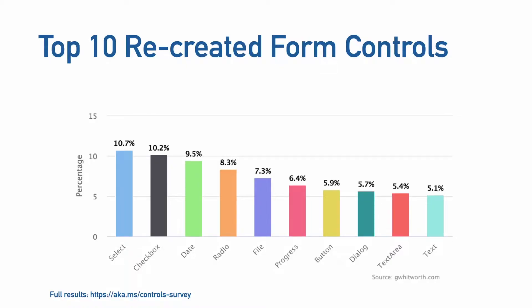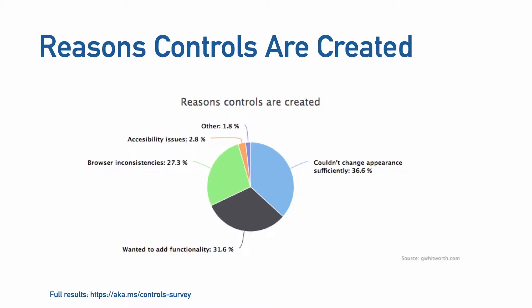Select came in at 10.7%, checkbox at 10.2%, and date at 9.5%, followed by radio, file, progress, button, dialogue, textarea, and text. Then he wanted to know the reasons why controls were being rebuilt. Over a third of respondents said it was because they couldn't change the appearance. Another third just wanted to add functionality — they wanted to extend the control. Just under a third said it was because of browser inconsistencies, which likely has to do with appearance and rendering. Grouping that with the first group, that's over two-thirds of developers spending time recreating form controls from scratch just because of appearance — that's a lot of developer time.